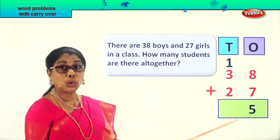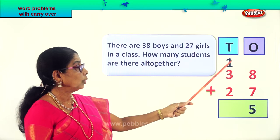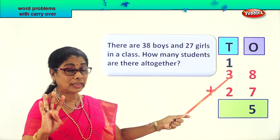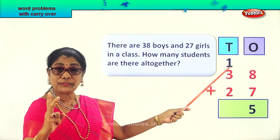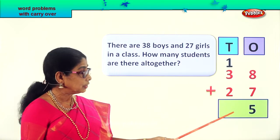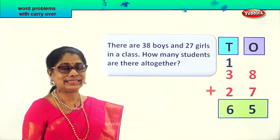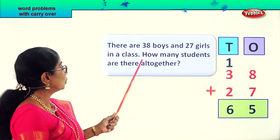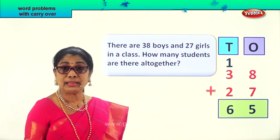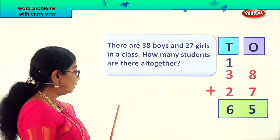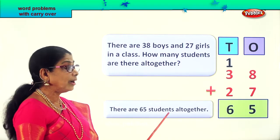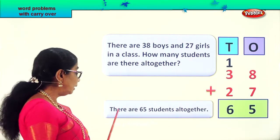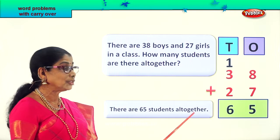When it comes to the tens place, it becomes one ten. Ten ones is one ten, so we put it in the tens place. Now let's add all the tens: one ten plus three tens is four tens, plus two tens gives six tens. So we get six tens — that is sixty-five. There are sixty-five students altogether, girls and boys together.